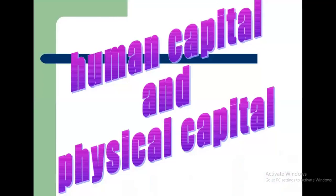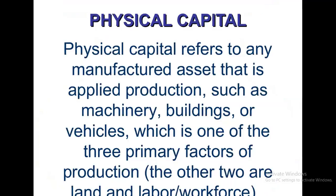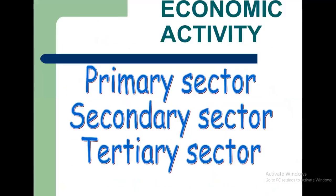Then we have seen what is human capital and physical capital. Human capital is where skills and roles are used by people to show their abilities. But for human capital, proper investment is needed — investments in education, health, and training. If we give these inputs, then only we will get a productive human capital. Physical capital refers to manufactured assets applied in production, like machines, buildings, and land, and they come together with the help of human capital.